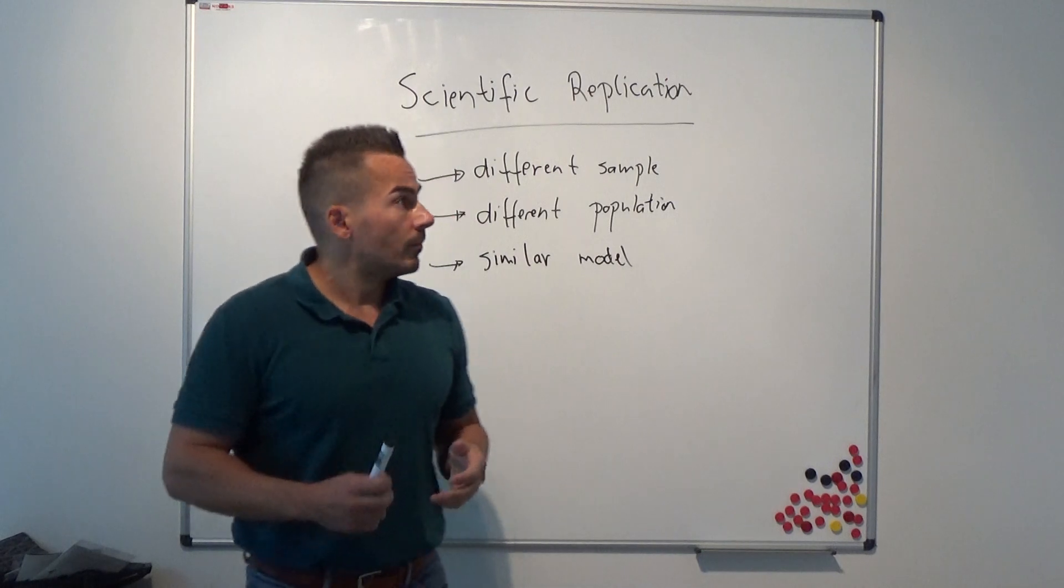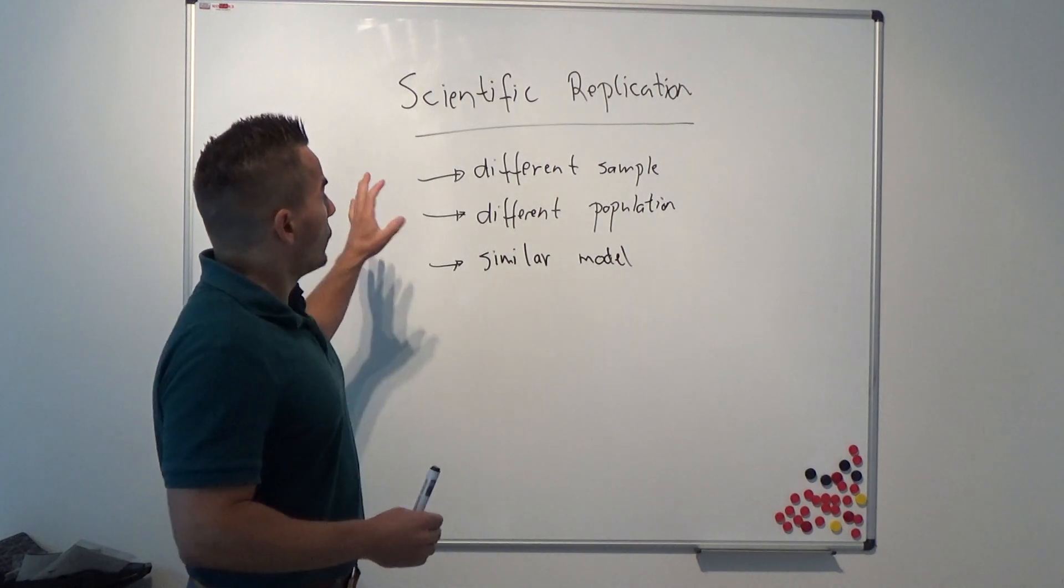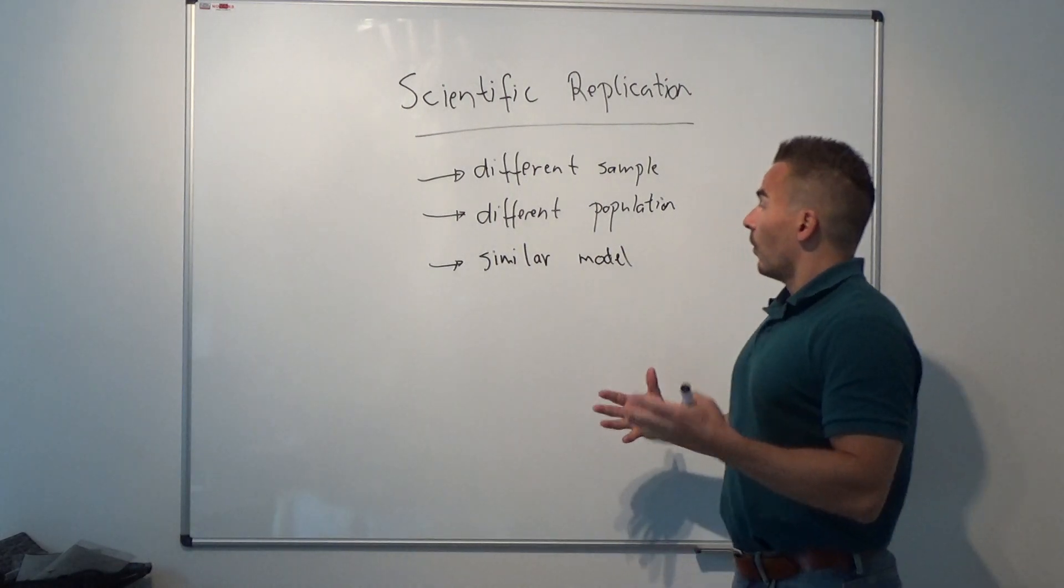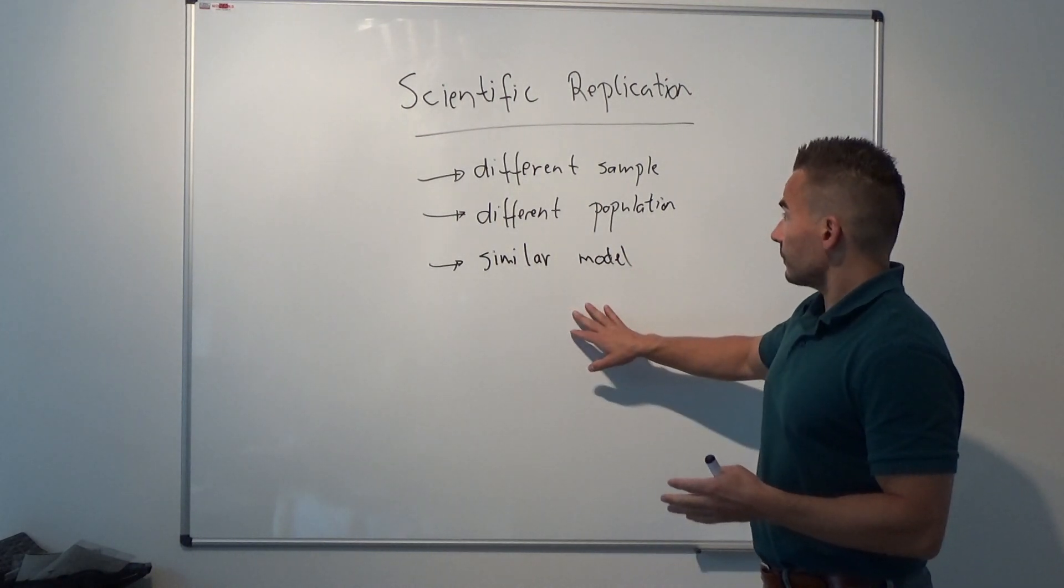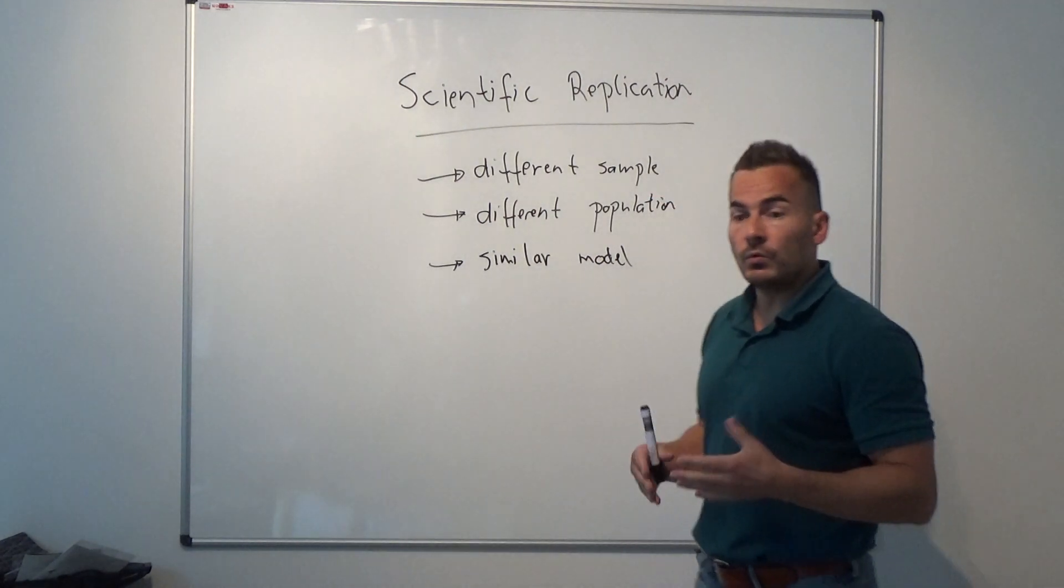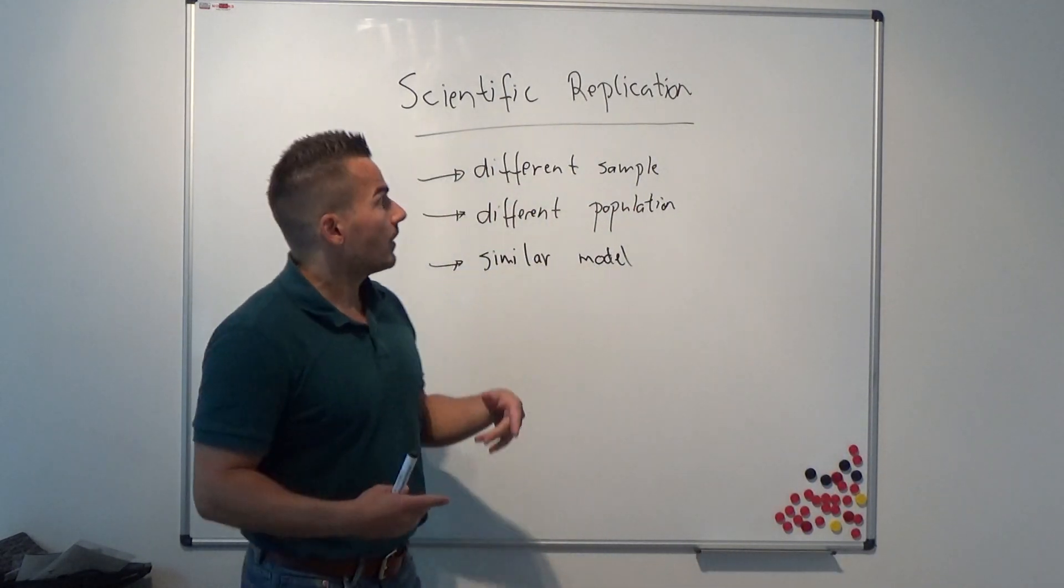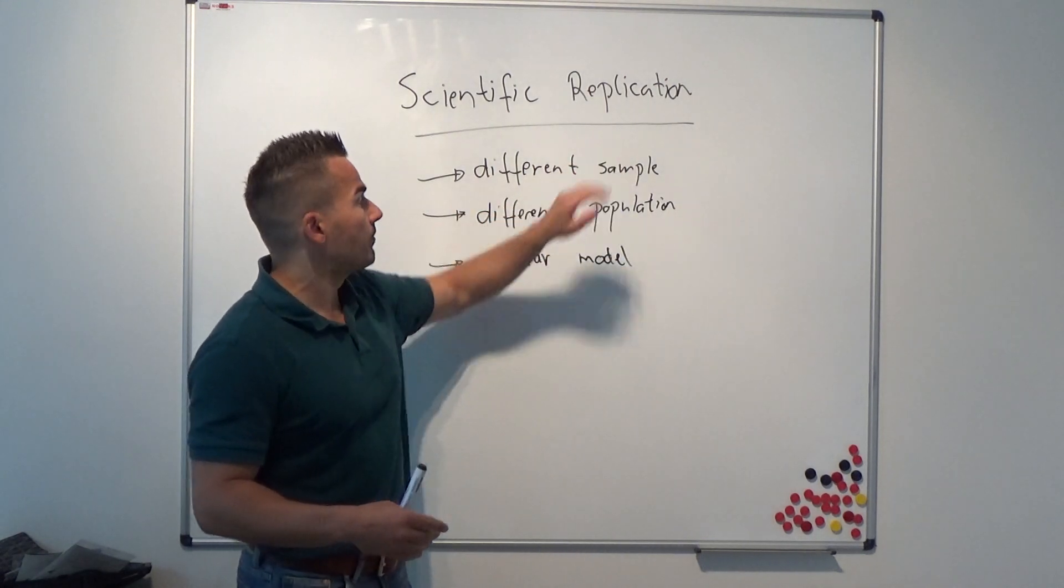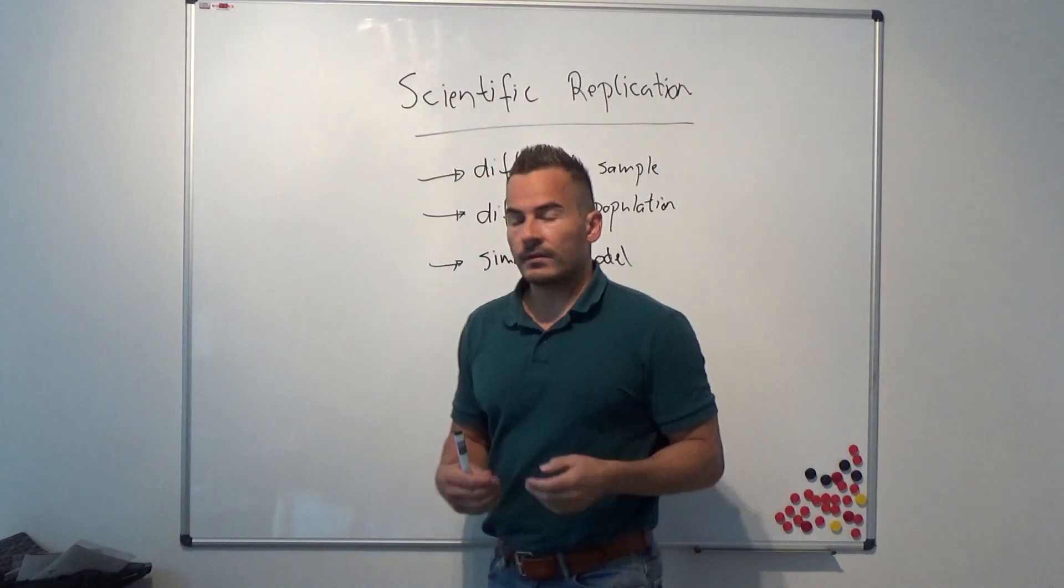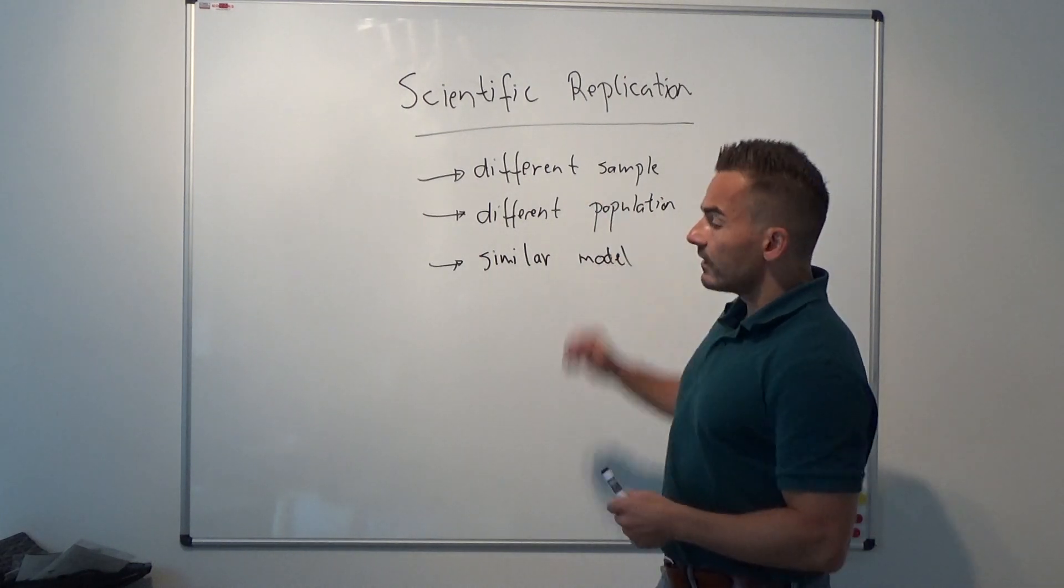The difference between scientific replication and statistical replication is that if we would run a statistical replication, we would use the same model, the same population, but a different sample. For instance, what we do in bootstrapping - when you apply bootstrapping to a data set, you create a new sample or an artificial sample based upon the same population, and what you get is basically different t-statistics if you would do that for a vector of returns.